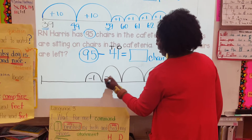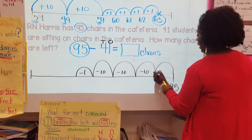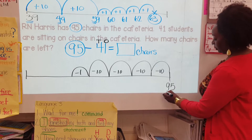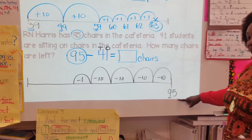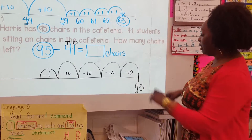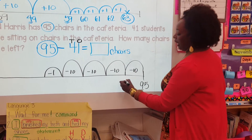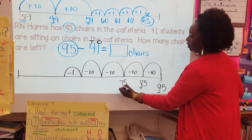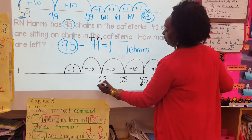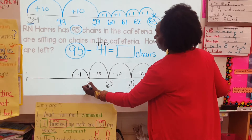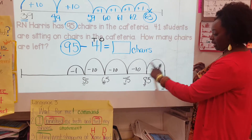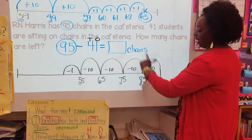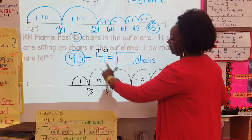We take away minus 10, minus 10, minus 10, minus 10. Let's start at 95 and jump back 10. Look at your tens place — we have a 9 in the tens place, so we go down: 95, count back: 85, count back: 75, keep going: 65, and one more: 55. Notice how only the tens place went down each time because we're jumping down tens: 95, 85, 75, 65, 55.